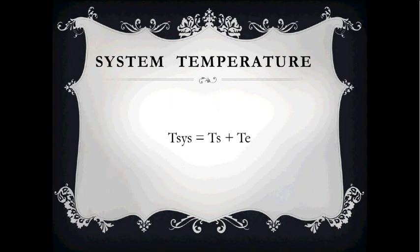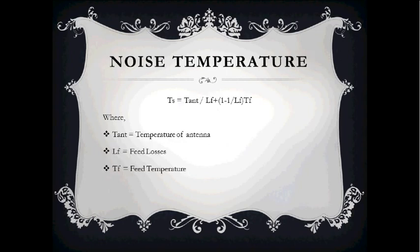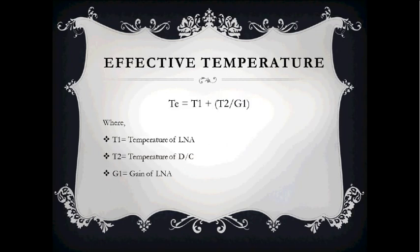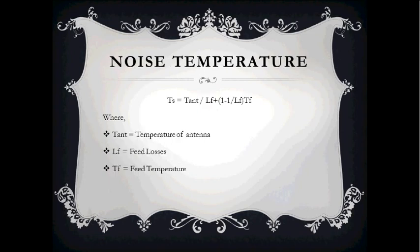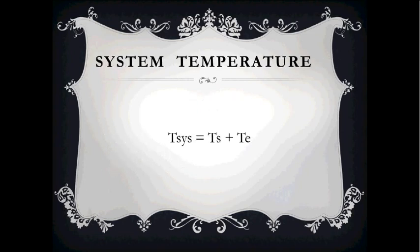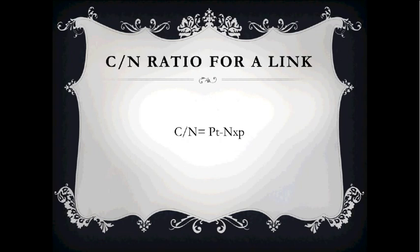The system temperature is simply the sum of the noise temperature and the effective temperature — by adding them both we can have the system temperature. The carrier-to-noise ratio for a link can be computed by a simple formula: transmitter power minus noise power. By subtracting the noise power from the transmitter power, we can have the carrier-to-noise ratio for a link.